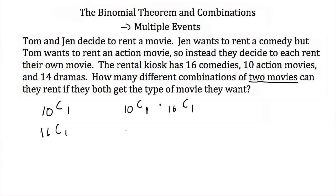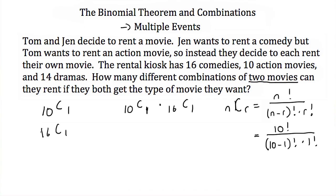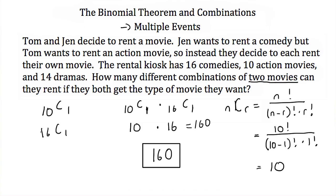We just have to solve for 10 choose one and 16 choose one. Plugging into the formula nCr = n factorial over n minus r factorial times r factorial, Tom's choice gives 10 factorial over 9 factorial times 1 factorial, which equals 10. Similarly, Jen has 16 different ways to choose one movie out of 16. So 10 times 16 is 160 — there are 160 different combinations of Tom renting an action movie and Jen renting a comedy.